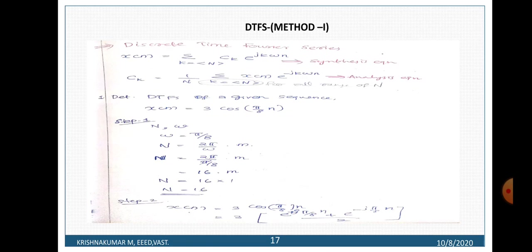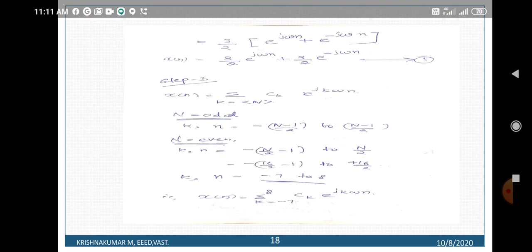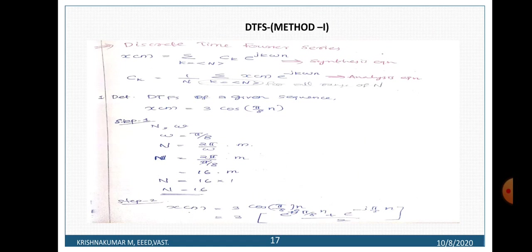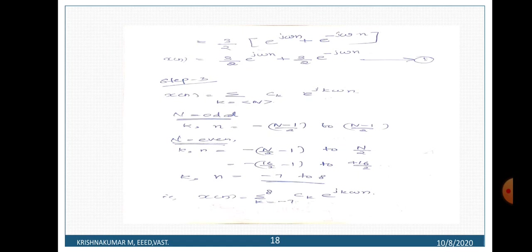Step 2: Expand x of n using Euler's formula. x of n equals 3 cos(π/8 · n). Using cos(theta) equals (e raised to j·theta plus e raised to minus j·theta) divided by 2, we get: 3 times (e raised to j·π/8·n plus e raised to minus j·π/8·n) divided by 2. Substituting omega for π/8: this equals 3/2 times e raised to j·omega·n plus 3/2 times e raised to minus j·omega·n. This is equation number 1.